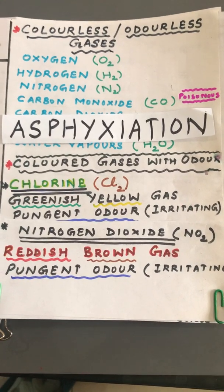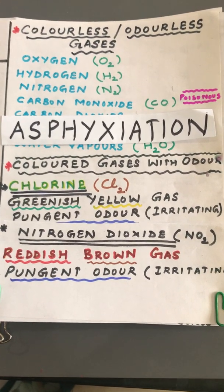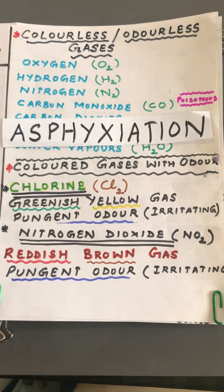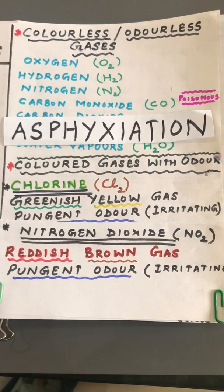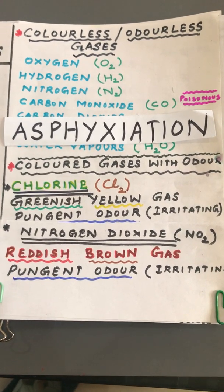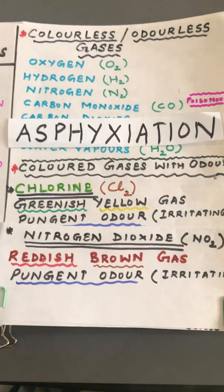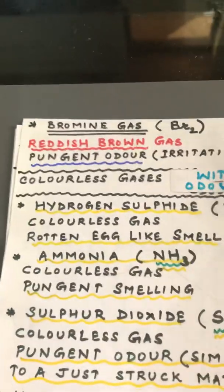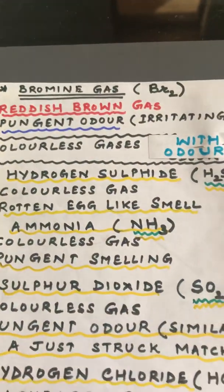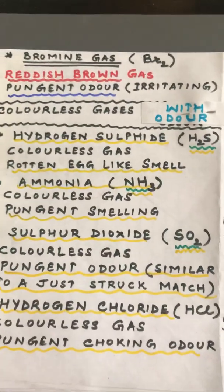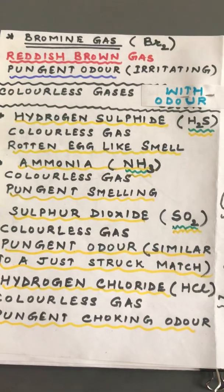Now let us discuss colored gases with odor. Chlorine Cl2 is a greenish yellow gas having a pungent, irritating odor. Nitrogen dioxide NO2 has a reddish brown color and is again a pungent, irritating gas. Bromine is another reddish brown colored gas with a pungent, irritating odor.